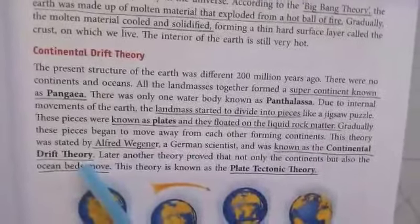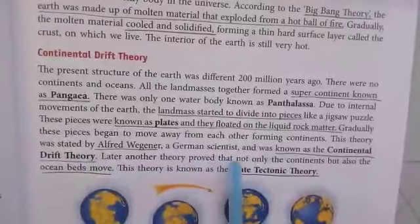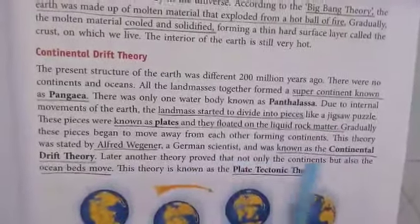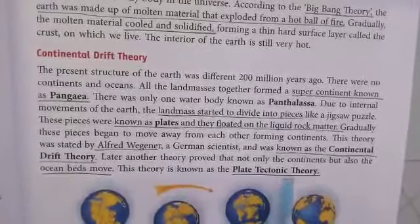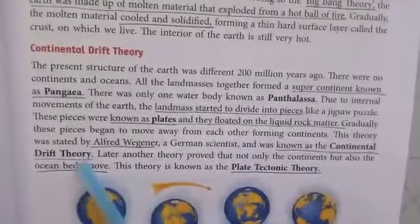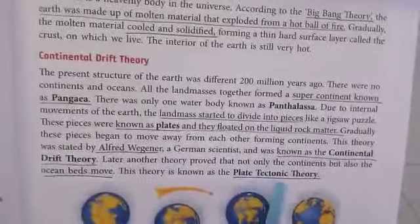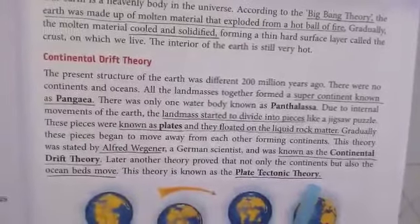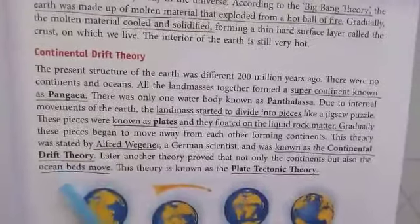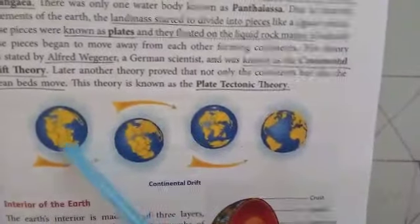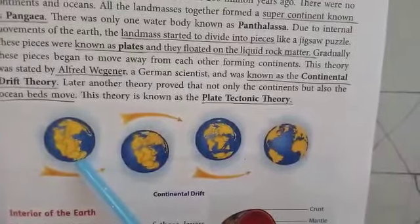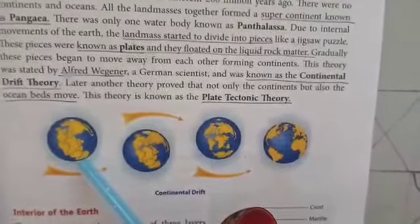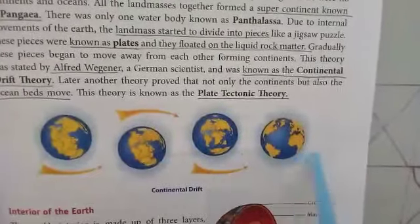Later, another theory called the Plate Tectonic Theory proved that not only land masses but also ocean bodies move. The Continental Drift Theory tells about land mass movement, while the Plate Tectonic Theory explains movement of the ocean beds as well. In the picture, we can see how the seven continents were all at one place 200 million years ago, and later divided into the seven continents we know today.